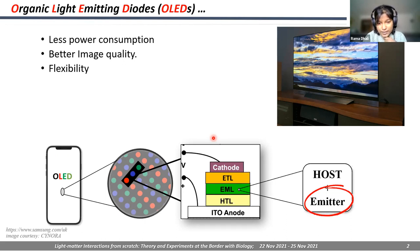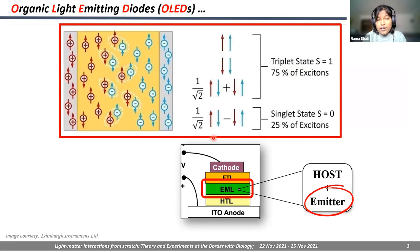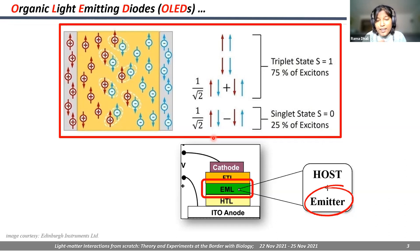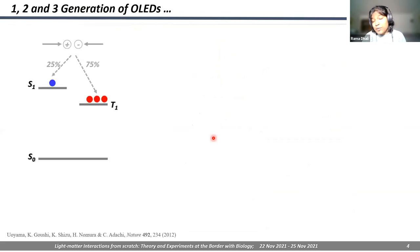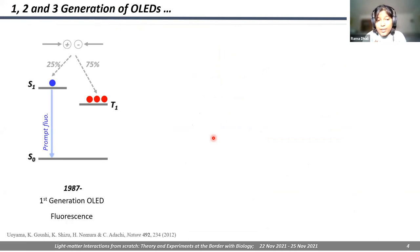The emitter is the molecule that emits light, causing the different colors, and our main focus today will be the emitter. The host basically helps to change the environment for our molecule. When we inject electrons and holes, they pair up — they usually have half spin — and depending on the combination, we can have singlet or triplet. From spin statistics, we know that we have a 25% possibility of singlet and 75% triplet population.